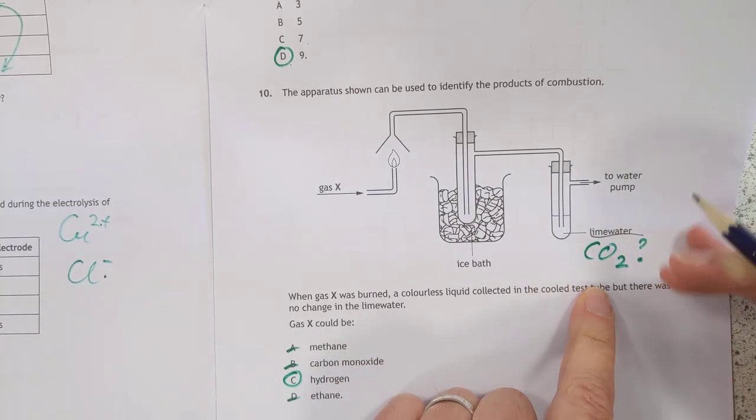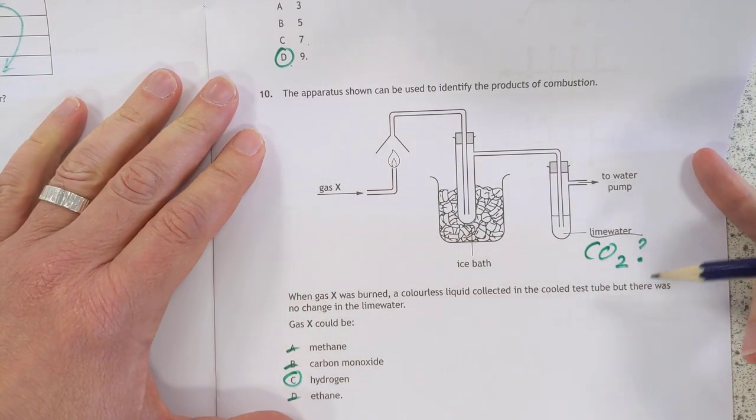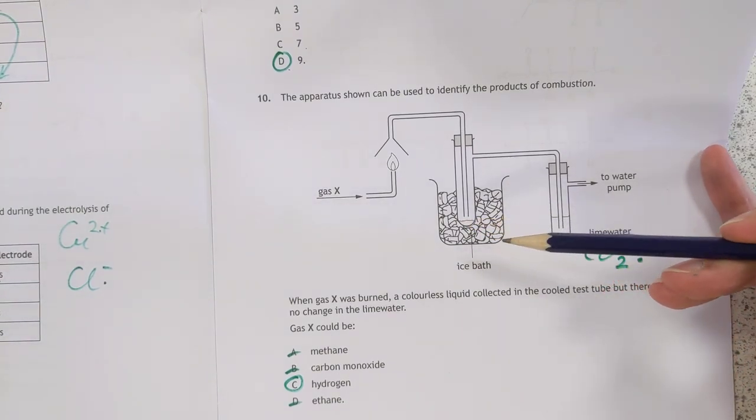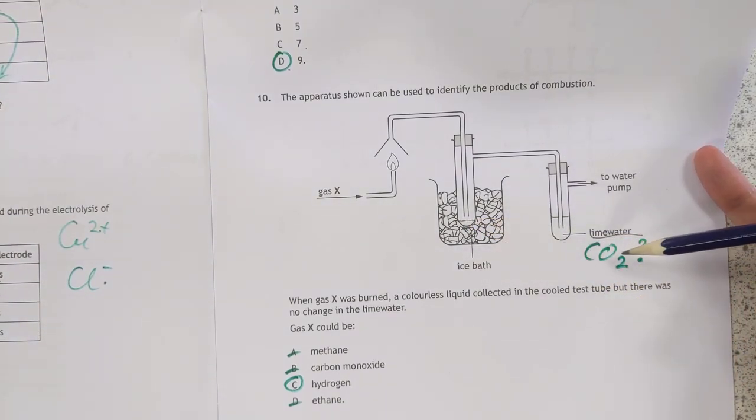Now, lime water tests for carbon dioxide. And it says here, when we burned gas X, we got a colorless liquid in here. Not sure what that would be. And there was no change in the lime water.